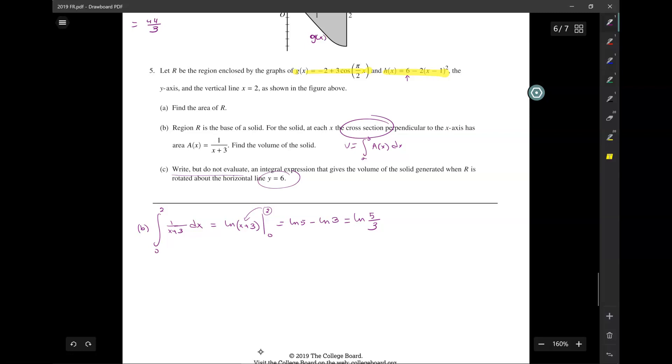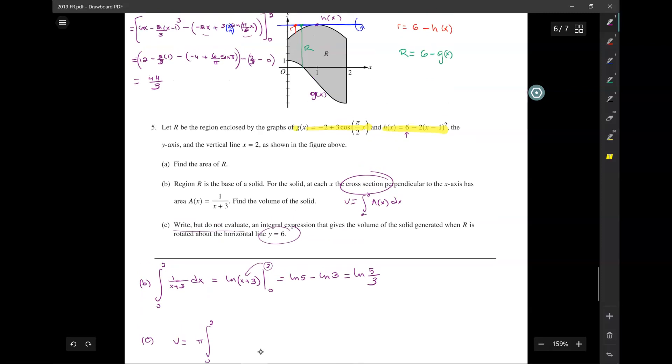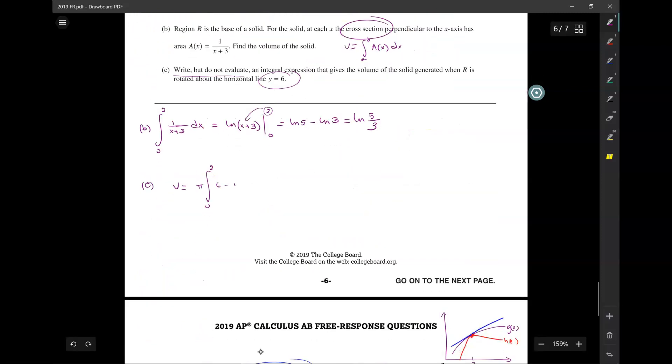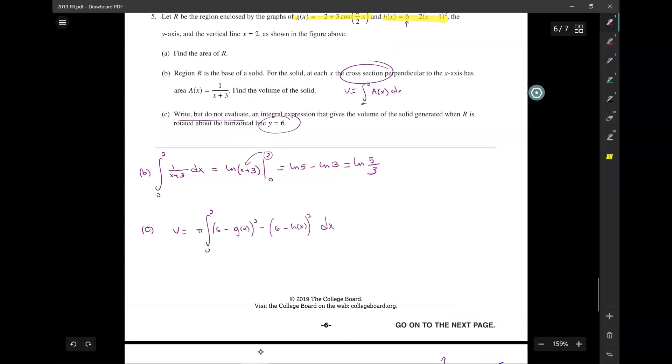So the volume then is the integral for part c is pi times the integral from 0 to 2 r squared. So we have to do big R squared minus little r squared. So big R squared is 6 minus g of x squared minus little r squared, which is 6 minus h of x squared dx. And that's it. We don't have to integrate this. We just have to find the integral. And you don't have to substitute the actual functions for g of x and h of x because these are functions that they've given you themselves. So that's full points right there. Okay, thank you very much.